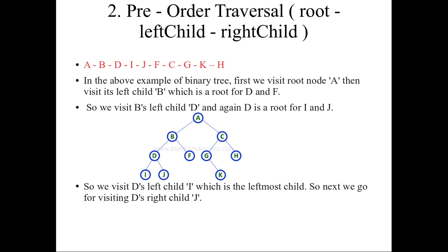The same example which was taken in inorder traversal has been taken here also. If you look at the binary tree, A is the root node. So in preorder traversal, we have to visit the root first — we can visit A directly. A is marked as visited. Then A has the left child B, which is the root for D and F. So we visit B's left child D, and again D is the root for I and J. So we visit D.